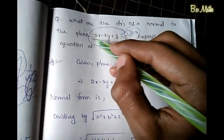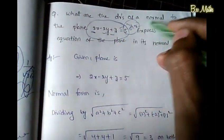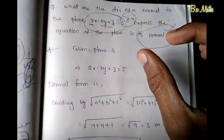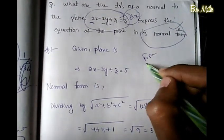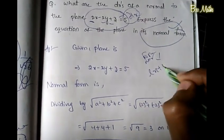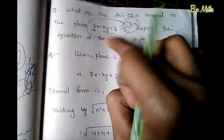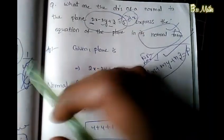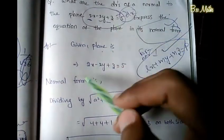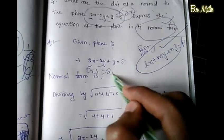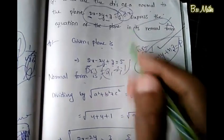For the plane 2x - 2y + z = 5, the direction ratios of the normal are the coefficients of x, y, and z. So the DRs of the normal are (2, -2, 1). Now we need to express the equation in normal form. The normal form of a plane is lx + my + nz = p.